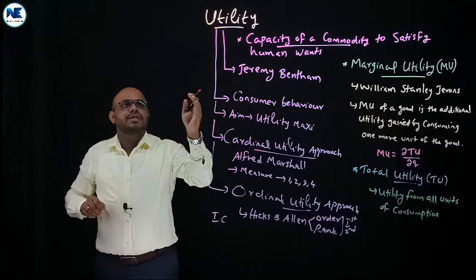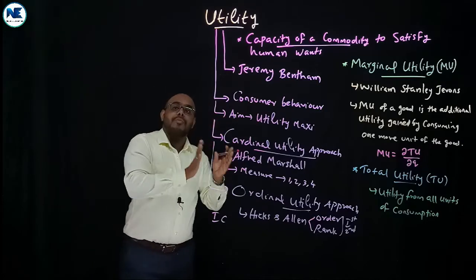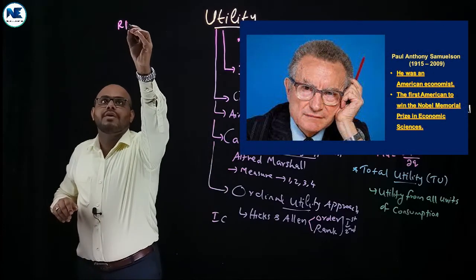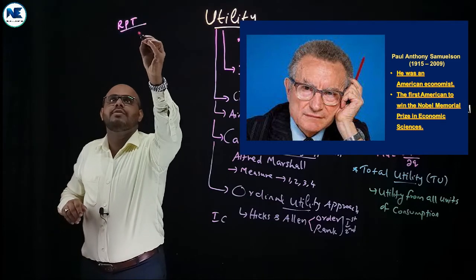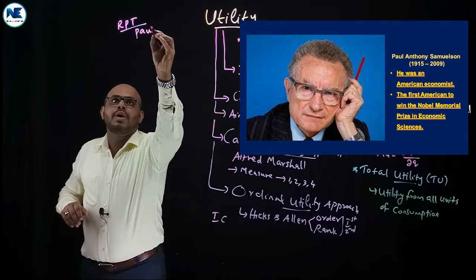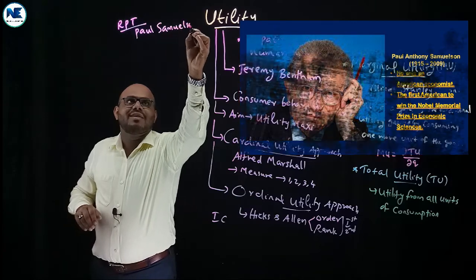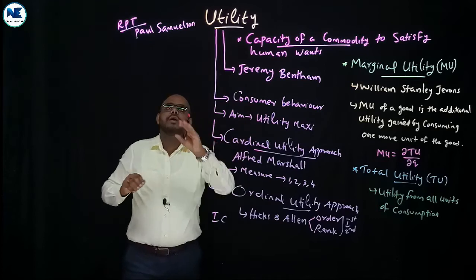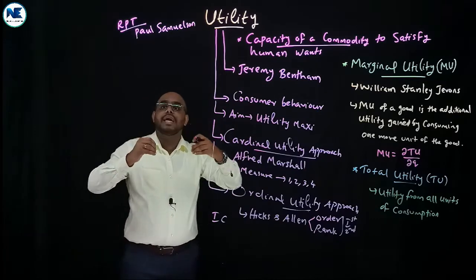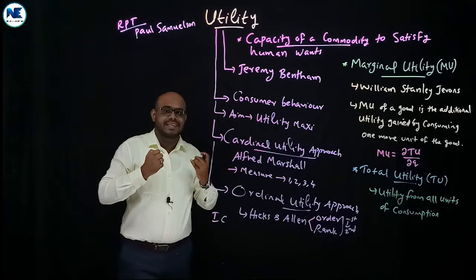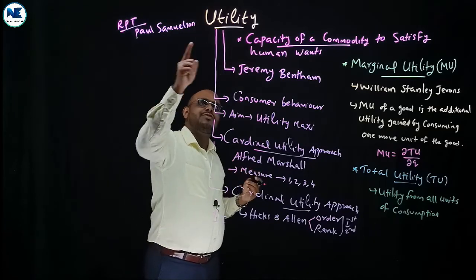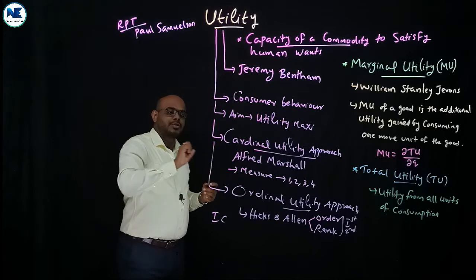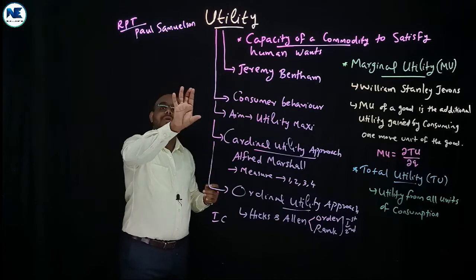The third approach is the revealed preference theory, introduced and developed by Paul Samuelson. It is a behavioralistic approach. These are the three important approaches related to utility: the cardinal utility approach, the ordinal utility approach, and the revealed preference theory.